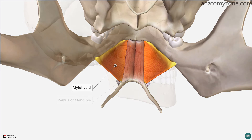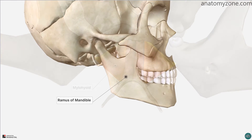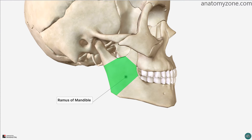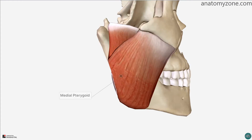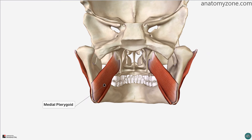Returning to the external surface of the mandible, let's take a look at the ramus. The ramus is the large, flat, lateral aspect of the mandible. The external flat surface provides the origin for the powerful masseter muscle. The internal surface of the ramus provides the insertion site for the medial pterygoid muscle.